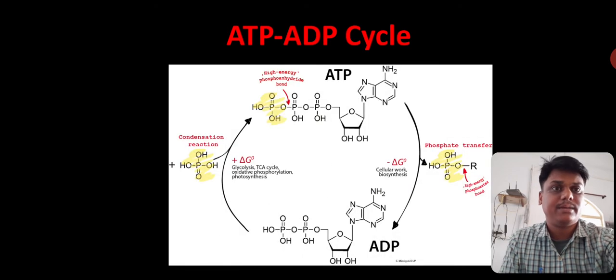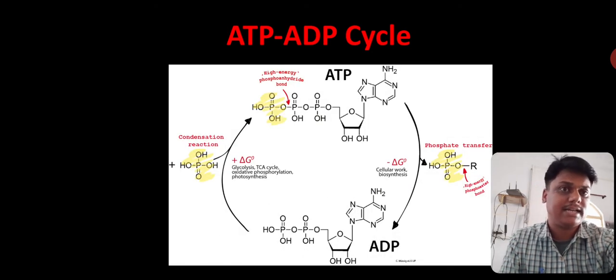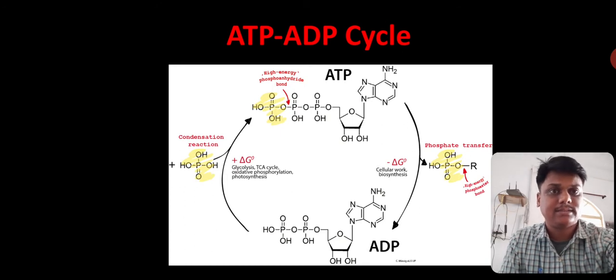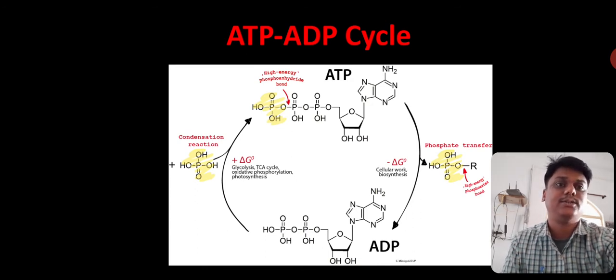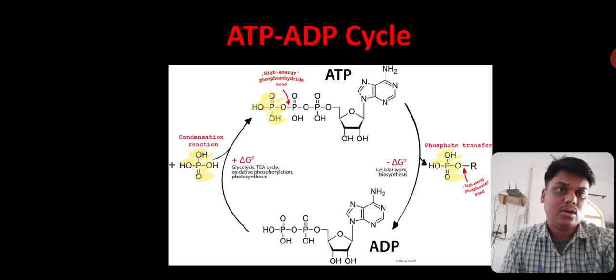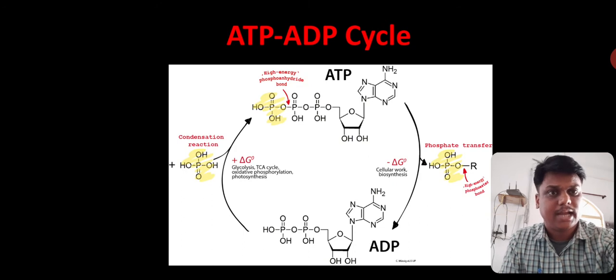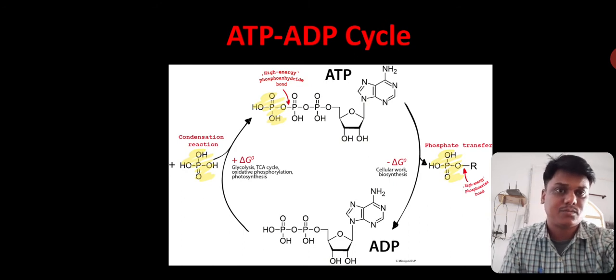ATP-ADP cycle. In this cycle, you will find that when ATP breaks its bond, it will release a lot of amount of energy as well as one phosphate group and convert into ADP. Here in the yellow portion, you will find that that is the phosphate which is removed from the ATP and then ADP is formed.